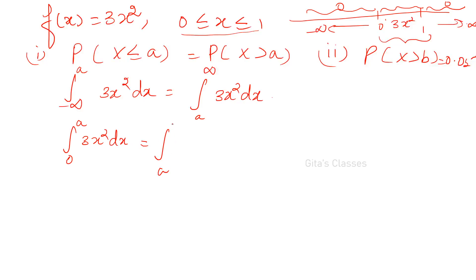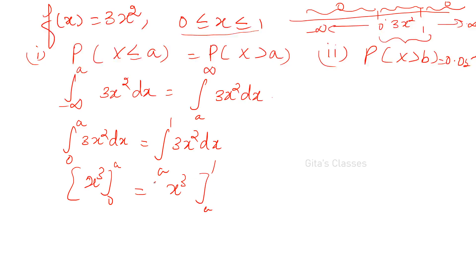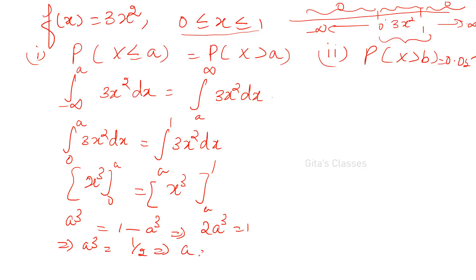So 2a³ = 1, which gives a³ = 1/2, therefore a = (1/2)^(1/3). For part two: P(X > b) = 0.05, so ∫ᵦ¹ 3x² dx = 0.05. Evaluating: [x³]ᵦ¹ = 0.05, giving 1 − b³ = 0.05, so b³ = 0.95, therefore b = (0.95)^(1/3).